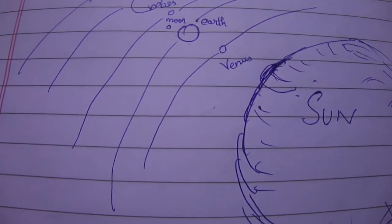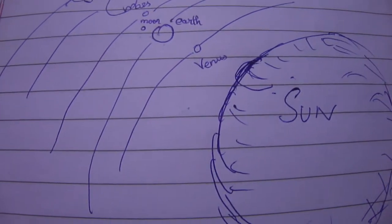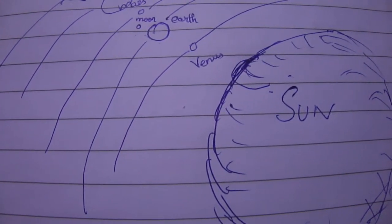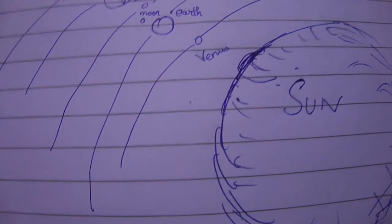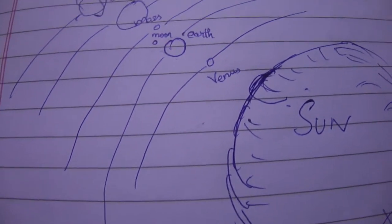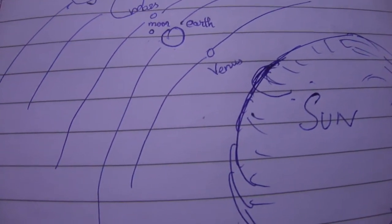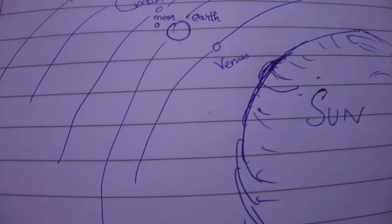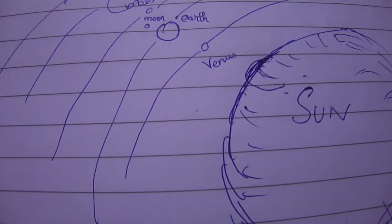Mercury is the smallest planet and Jupiter is the largest. Planets which are larger and closer to Earth are said to exert more influence on us.